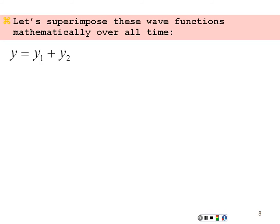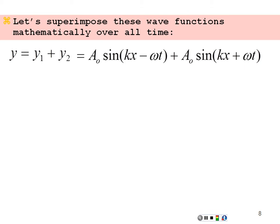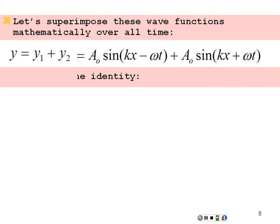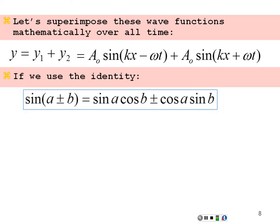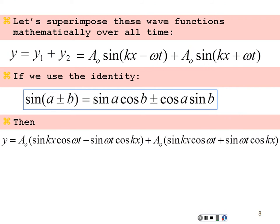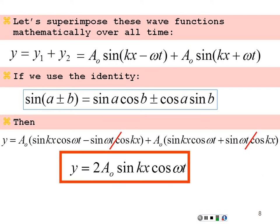Let's look at this interference mathematically. We add the two wave functions: A₀ sin(kx − ωt) + A₀ sin(kx + ωt). Using the trig identity sin(a ± b) = sin(a)cos(b) ± cos(a)sin(b), expanding both sine functions, we get A₀[sin(kx)cos(ωt) − sin(ωt)cos(kx)] + A₀[sin(kx)cos(ωt) + sin(ωt)cos(kx)]. The second terms cancel out, leaving us with the combined wave: 2A₀ sin(kx) cos(ωt).